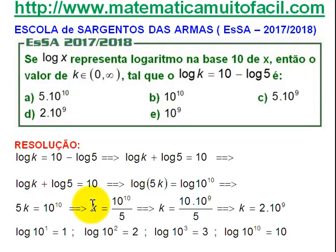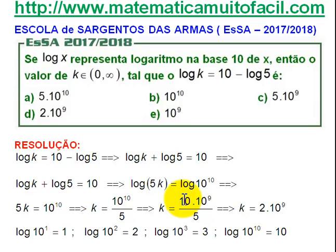Muita gente sai simplificando esse 10 com esse 5, mas não é isso que eu posso fazer. Eu posso cortar o 5 com um 10, mas não com 10 à décima como está aqui. Então, eu vou fazer uma montagem para poder fazer essa simplificação. K é igual a 10 vezes 10 à nona. Porque quando a gente multiplica potências de mesma base, conserva a base e adiciona os expoentes. O expoente aqui não é 1? Então 1 mais 9 dá 10.